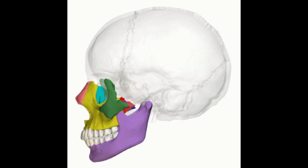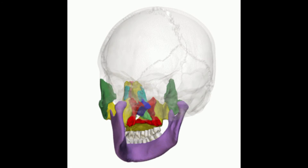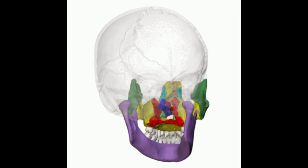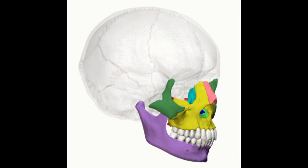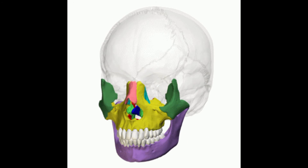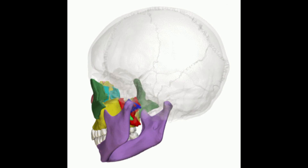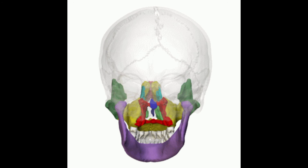Zygomatic bones are a pair of irregular bones that form the inferior and lateral portion of the face. These bones are also called ethmoid bone because of their cube shape and perforations from which olfactory nerves pass.